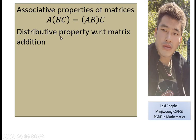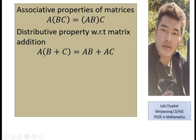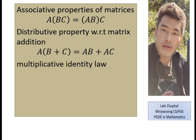The distributive property with respect to matrix addition states: if matrix A is multiplied with the sum of matrices B and C, then A×(B+C) = A×B + A×C. You distribute the multiplication of A across the sum of B and C.